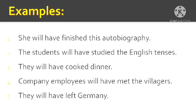The fourth sentence: 'Company employees will have met the villagers.' The company probably has a proposal or agricultural plan for the villagers. 'Company employees' is third person plural. 'Will have met' is the verb phrase — will as future tense indicator, have as perfective aspect, and 'met' is V3 of 'meet' — meet, met, met. 'The villagers' is the object of the sentence.